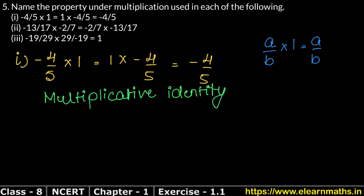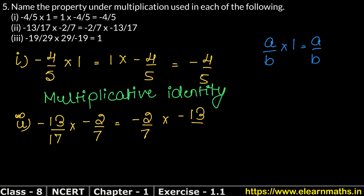Second part is: minus 13 upon 17 into minus 2 upon 7 equals minus 2 upon 7 into minus 13 upon 17. We are multiplying in different order but the answer is the same. This property is called the commutative law.